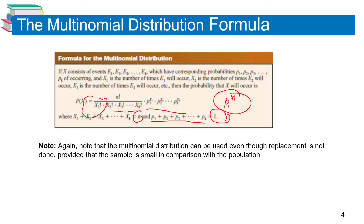Note that the multinomial distribution can be used even when replacement is not done, provided that the sample is small in comparison with the population.